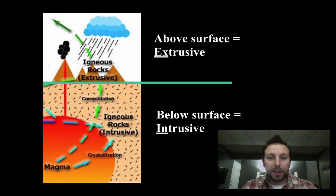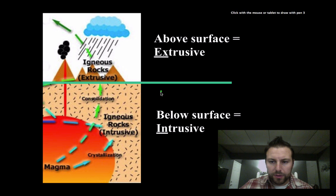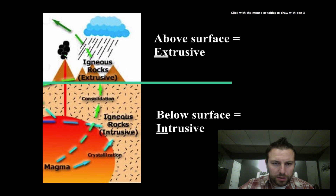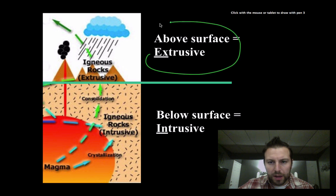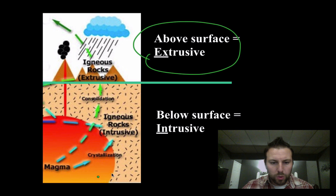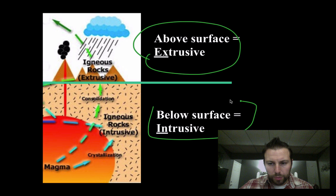Looking at a cross-section view of the surface, any magma that comes up through and cools on the surface will be extrusive. Any magma that cools within the earth will be intrusive.